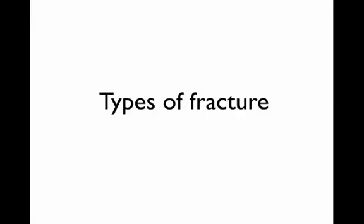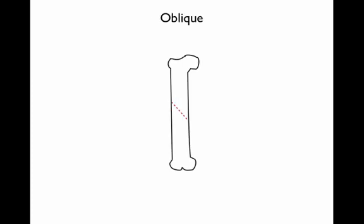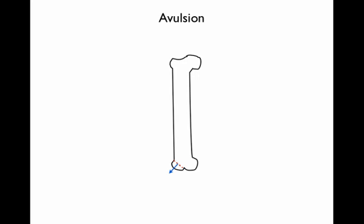Now we'll talk about types of fracture. A simple, common type is transverse, where the fracture line runs transversely. You then have oblique, where the fracture line is in an oblique fashion. Spiral fractures can be more difficult to detect and often require more than one view — for example, an AP and a lateral view. An avulsion fracture commonly occurs where forces cause a tendon attached to the bone to pull off a fragment or segment of bone.